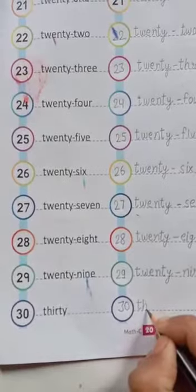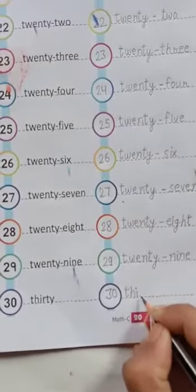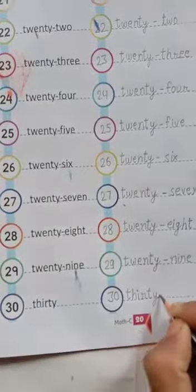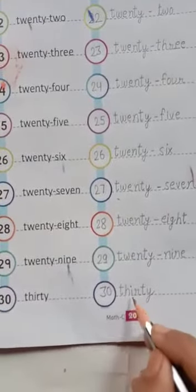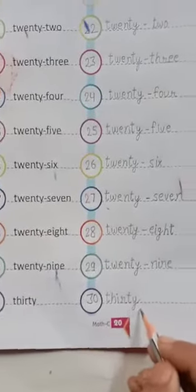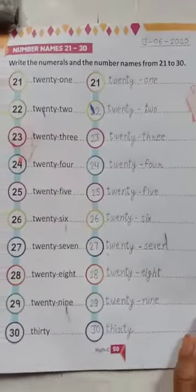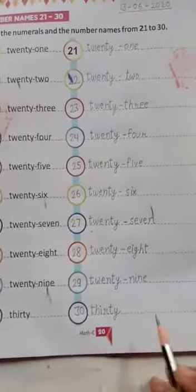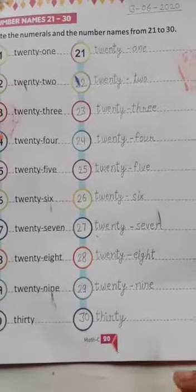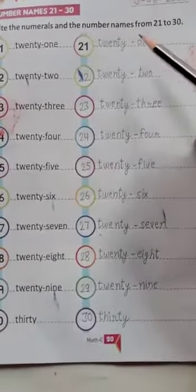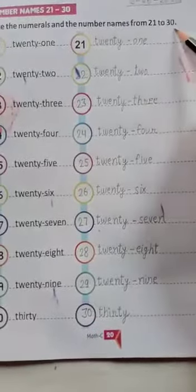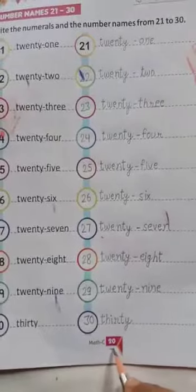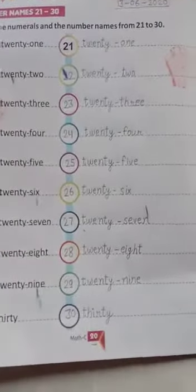Students, today is your homework to write the numerals and the number names from 21 to 30 in your book page number 20. Thank you.